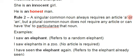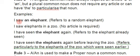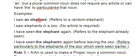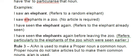Rule number two: a singular common noun always requires an article — 'a' or 'an'. But a plural common noun does not require any article, or it can have 'the' to particularize that noun. Remember, 'a' and 'an' are used only with singular common nouns.